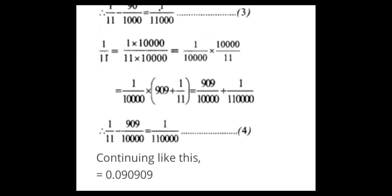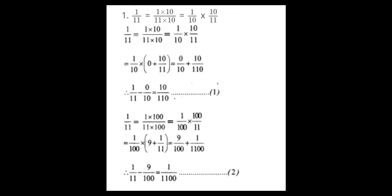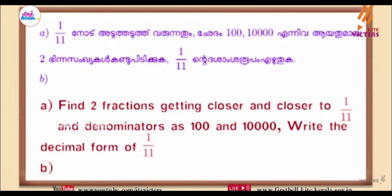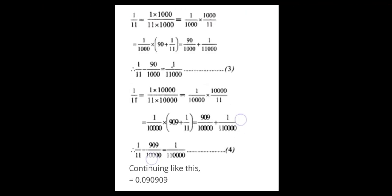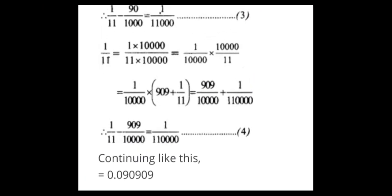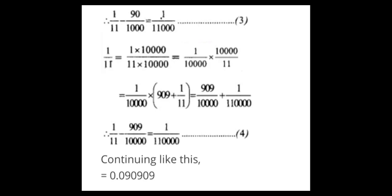1 by 11 equal to 1 into 1 lakh by 11 into 1 lakh. That gives us 1 by 1 lakh into 1 lakh by 11. So 10,000 — that's 10,000. 100 lakh, 1 lakh. That's 10 lakh. That's how you can read the lecture.